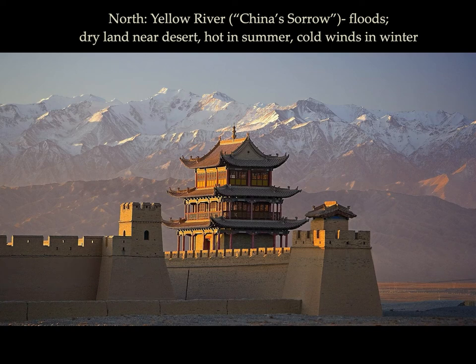In the north, where you have the Yellow River, the land is drier, it is hot during the summer, and very cold and rigid during the winter.